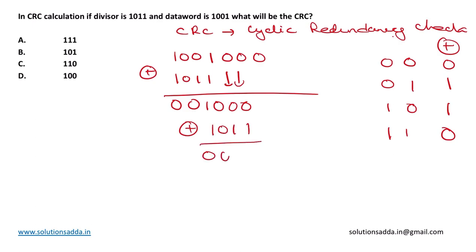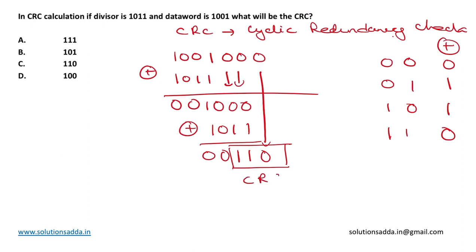Performing the second XOR: 1 XOR 1 is 0, 0 XOR 0 is 0, 0 XOR 1 is 1, 1 XOR 0 is 1. We bring down this 0. Since we appended 3 zeros at the end, the CRC is 3 bits, hence 110 is the CRC. According to the options, option C is correct — C is the correct answer for this question.